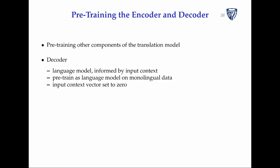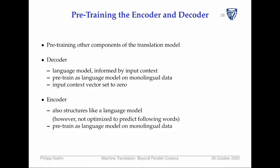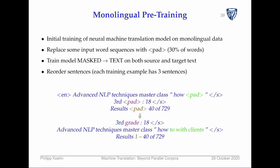The decoder could be informed by a pre-trained language model as well. We can pre-train the decoder as a language model by using the neural machine translation architecture, setting the input context always to zero, training on large amounts of monolingual text, and then initializing the translation model decoder with it. The same can be done for the encoder — although it's not optimized to predict following words since the input sentence is always fully given, we can still pre-train it as a language model on monolingual text.